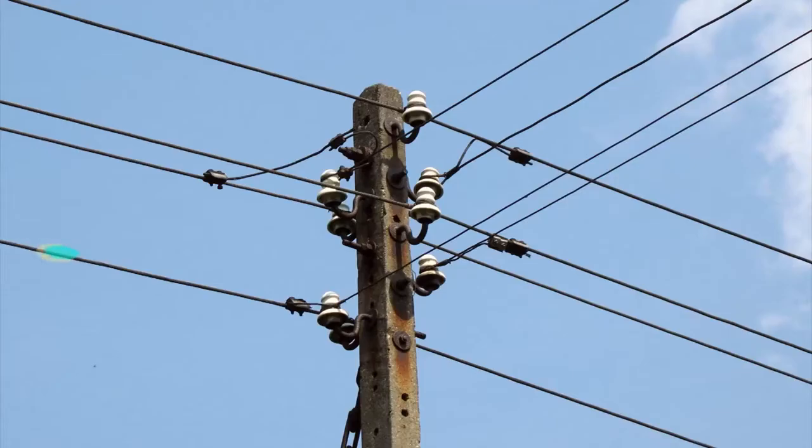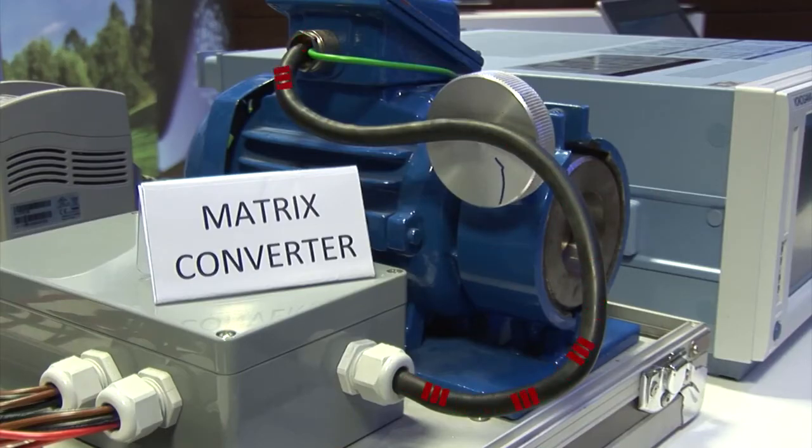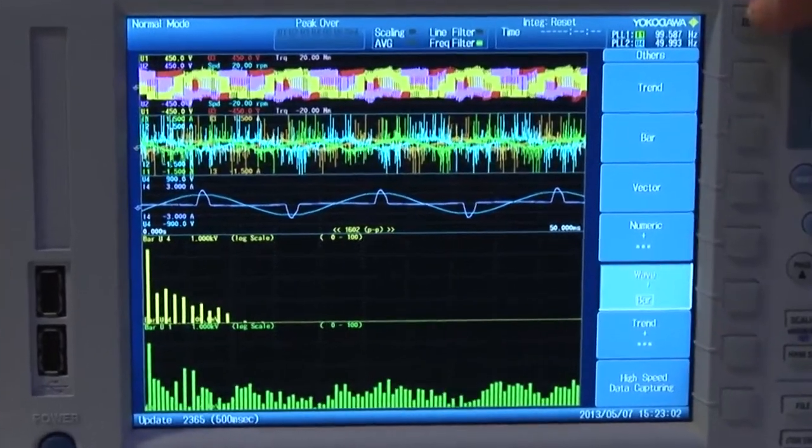In the case of a matrix converter, the input terminals are usually connected to the grid and the output terminals to an induction motor. Matrix converters can inject significant harmonics into the power system.